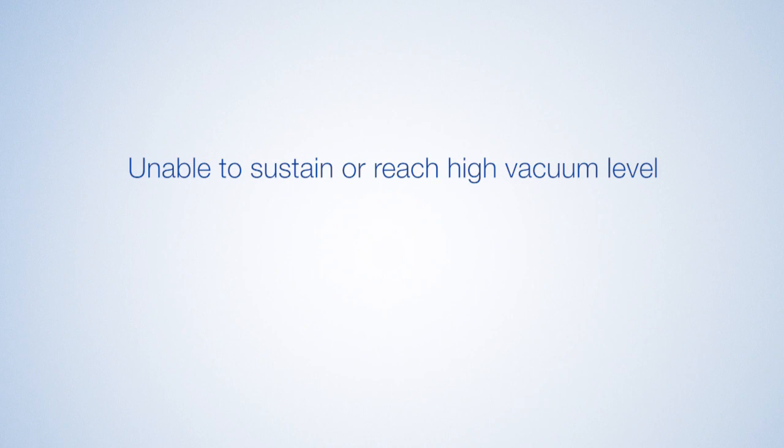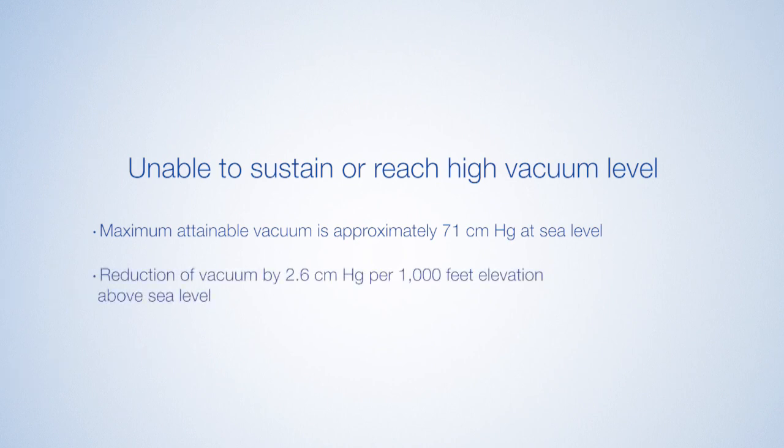Troubleshooting. Unable to sustain or reach high vacuum level. If the vacuum appears to be lower than usual or a hissing noise is heard, check all fittings for secure attachment and check to see if any fitting is damaged. The maximum attainable vacuum is approximately 71 centimeters of mercury at sea level. However, there is a reduction of vacuum by 2.6 centimeters of mercury for 1,000 feet elevation above sea level.